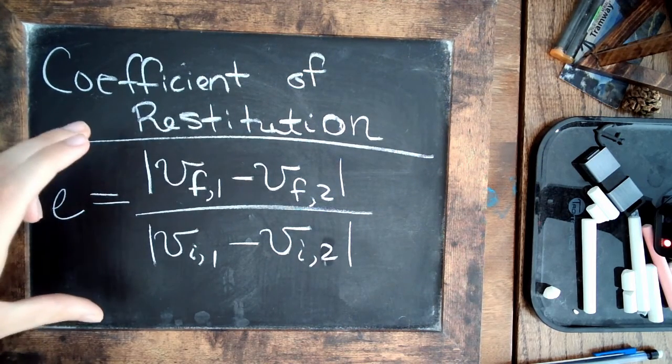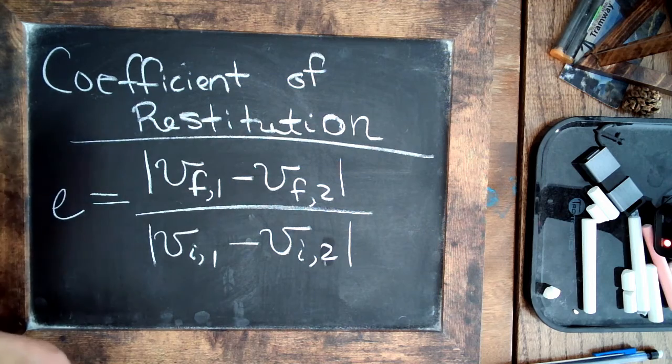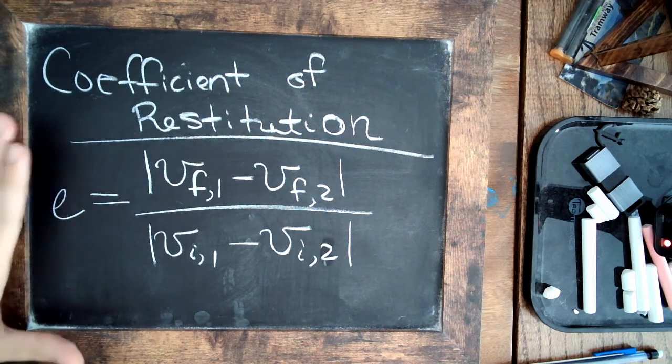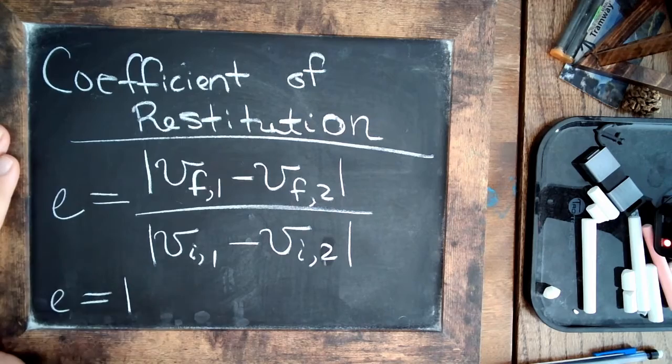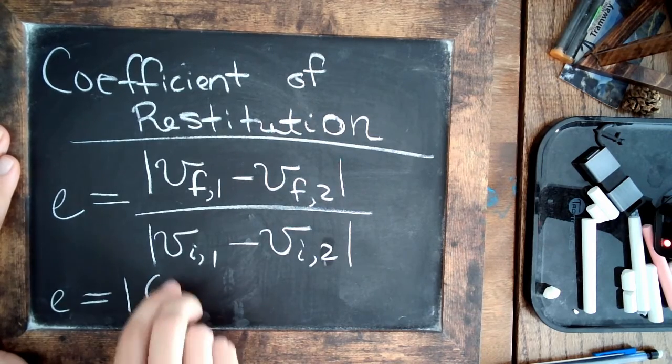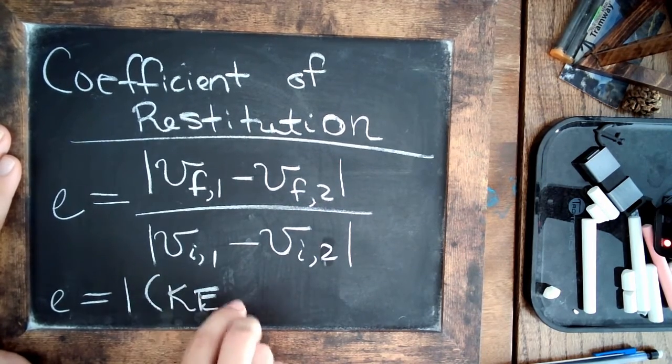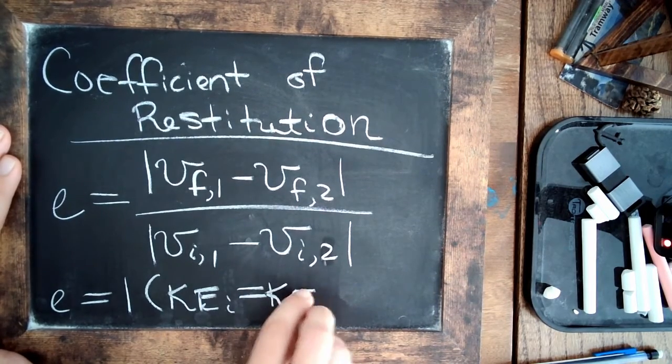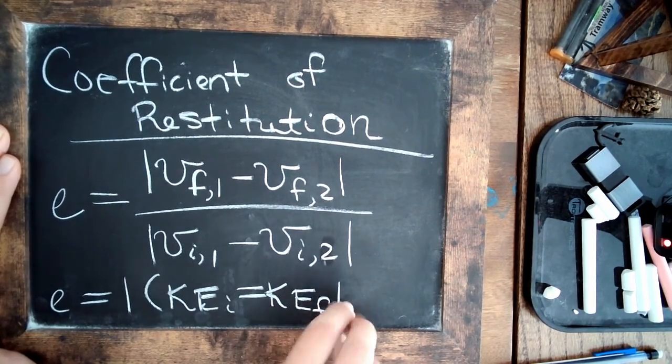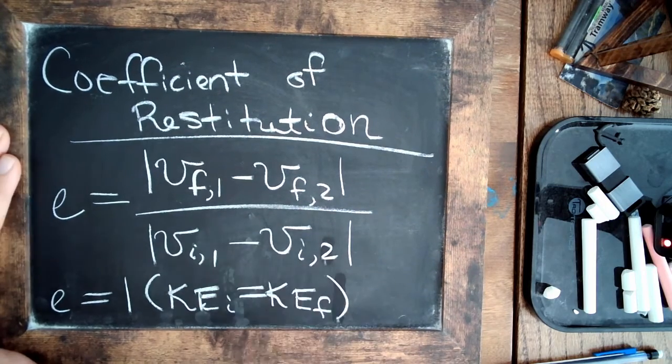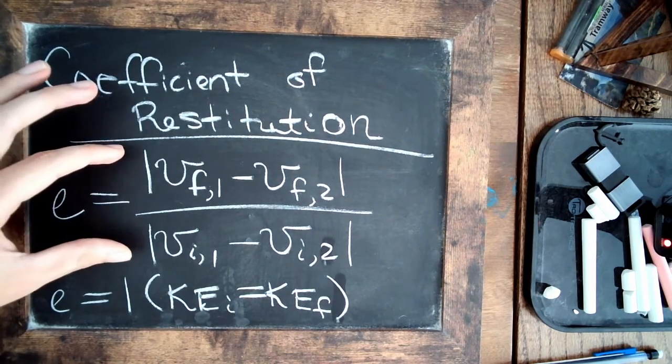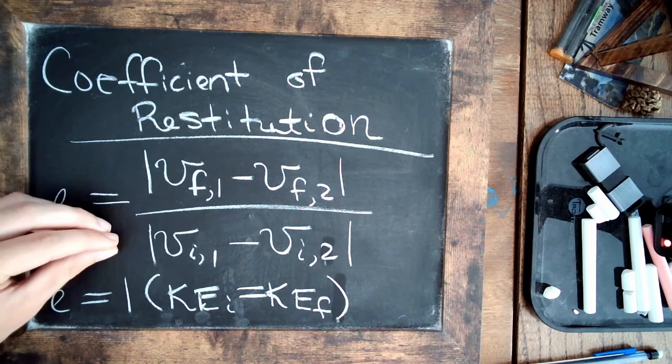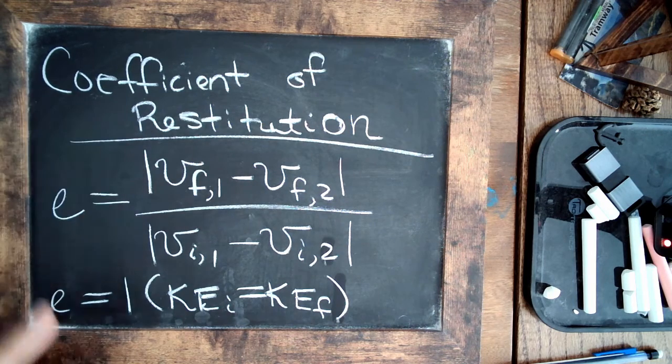So in an ideal case, in the elastic case, this coefficient would be equal to one. So this is the case of kinetic energy conservation. If the initial kinetic energy is equal to the final, then the velocities would end up being the same, where all the velocity initial is transferred perfectly to the final state, and e equals one.